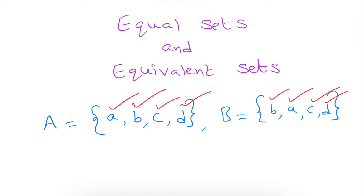Vice versa — in set B, whatever elements are present, the same elements are there in set A also. So if all the elements of set A are there in set B, and all the elements of set B are there in set A, then these two sets are called equal sets, and that is represented as A equals B.